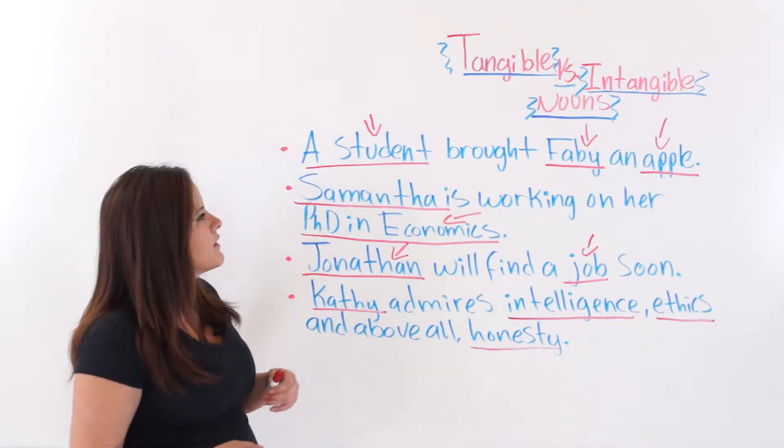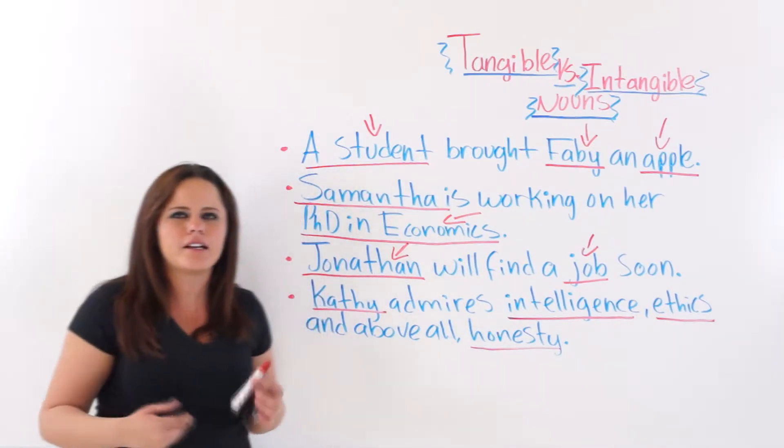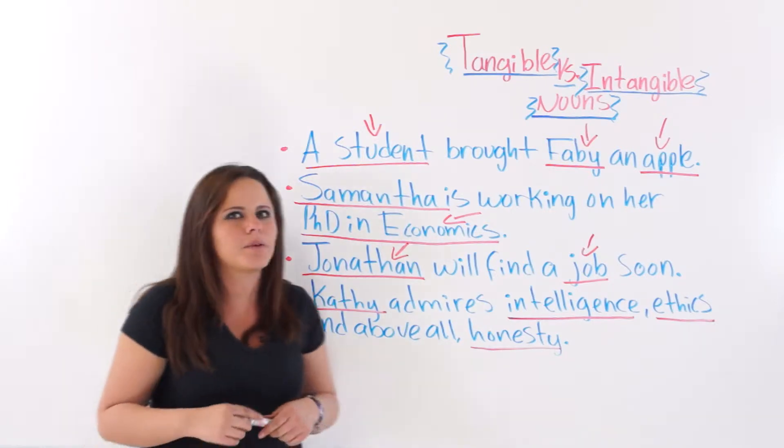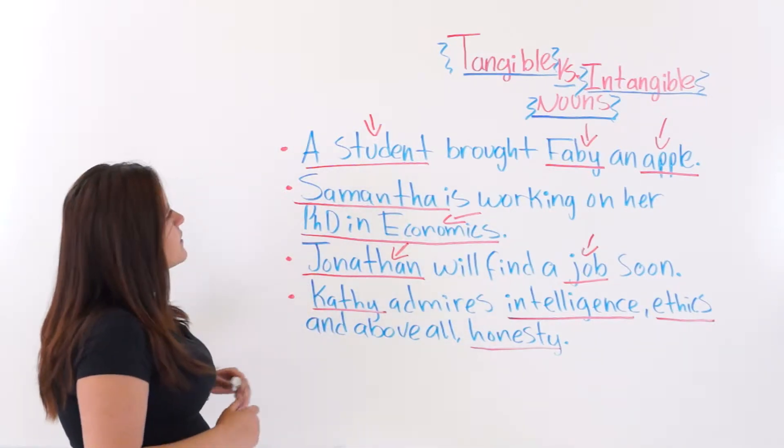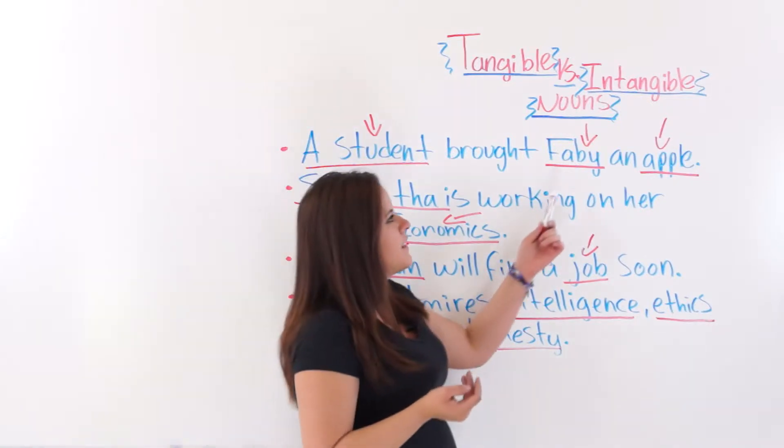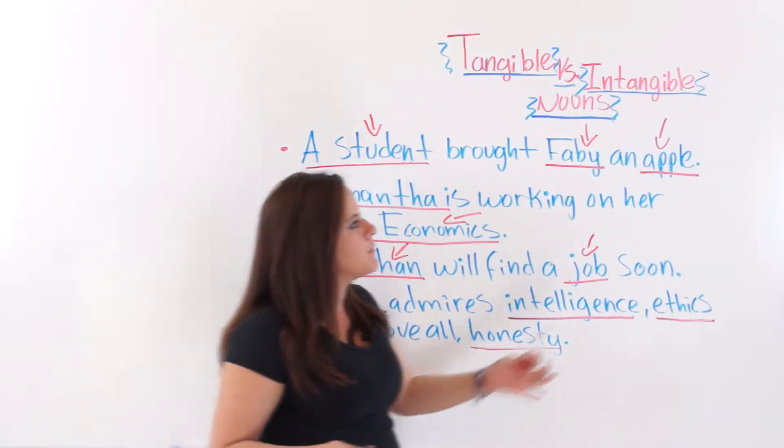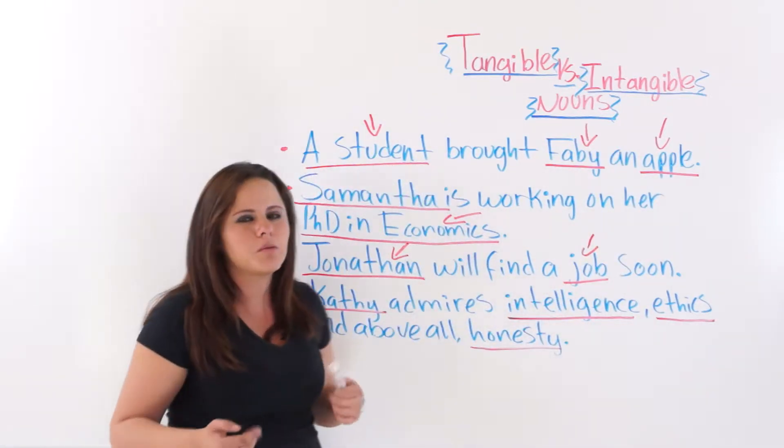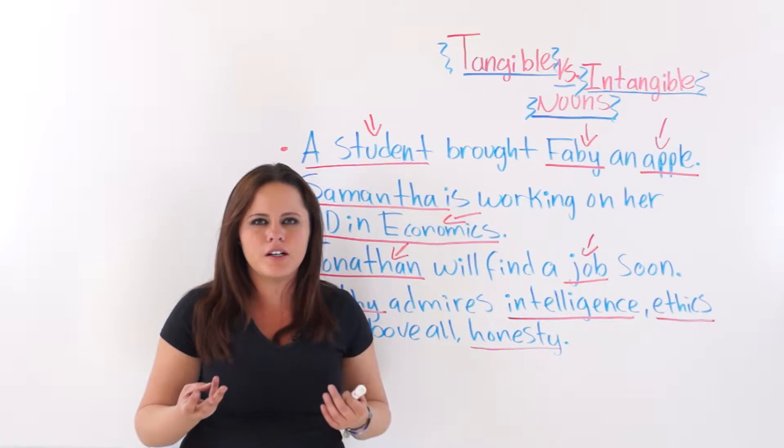Well, let's start with the first example. It says a student—tangible noun—brought Fabi—tangible noun—an apple—another tangible noun. They are all tangible because they can be heard, they can be felt, they can be smelt, they can be heard, and they can be tasted.